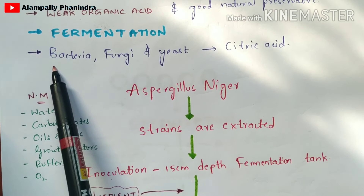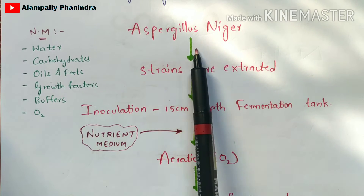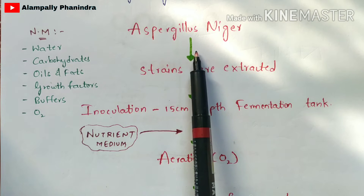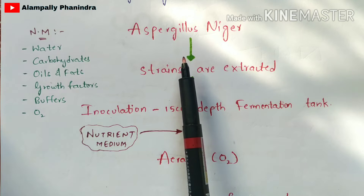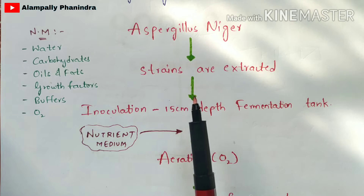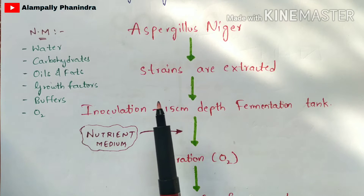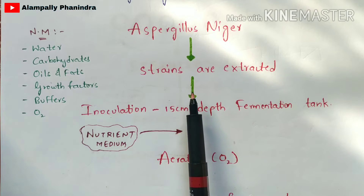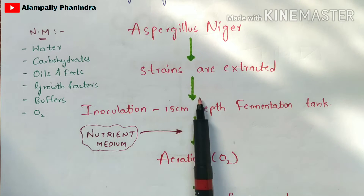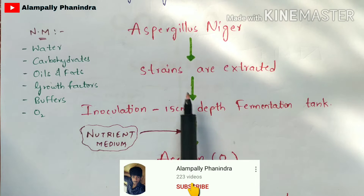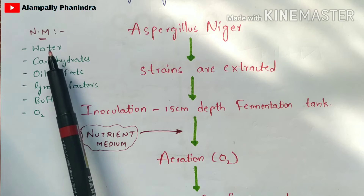The microorganism used here is a bacterium — specifically Aspergillus niger, which plays a major and vital role in the production of citric acid. We take the strains of Aspergillus niger, extract those strains, and place them into a fermentation tank. Make sure to clean the fermentation tank to avoid contamination of the culture or nutrient medium. After cleaning, you inoculate — that is, you add the Aspergillus niger strains into the fermentation tank, along with the nutrient medium.